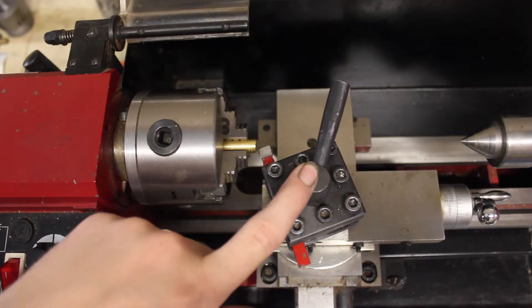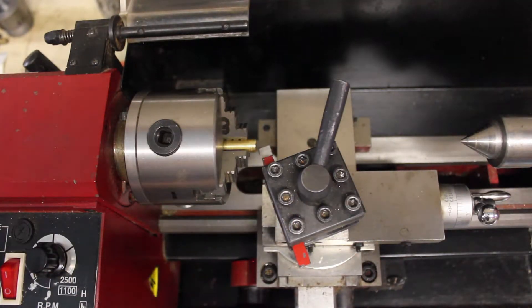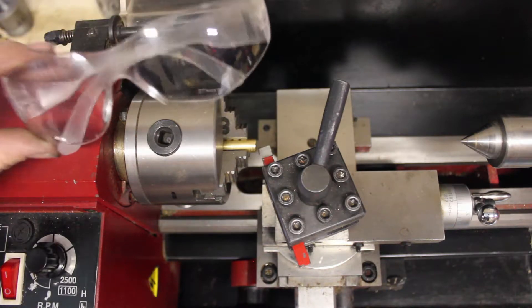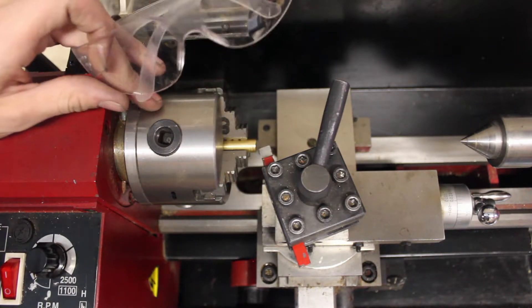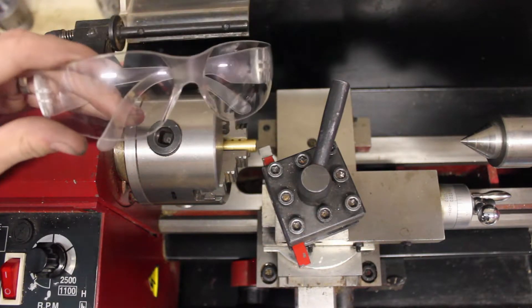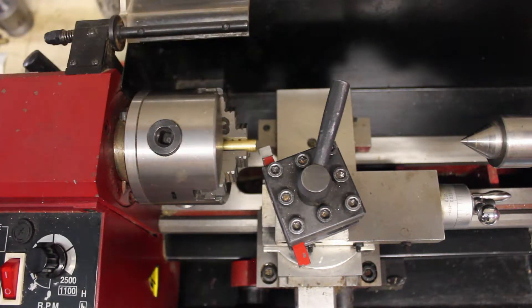Once your tool post is tightened up, you're ready to start cutting. But you want to make sure that you have proper safety equipment. Any time you're running a lathe or a mill or something like that, you're going to want safety glasses for sure. Sometimes if I'm running things with high speeds, I even use a face shield.